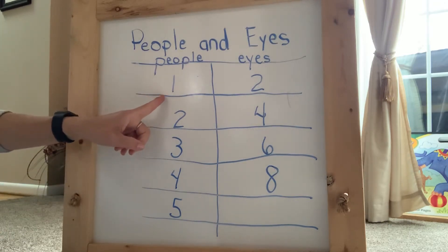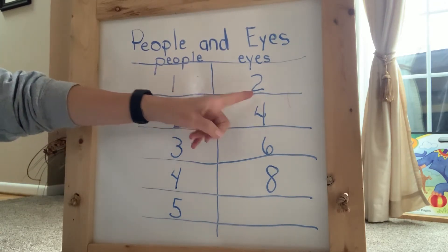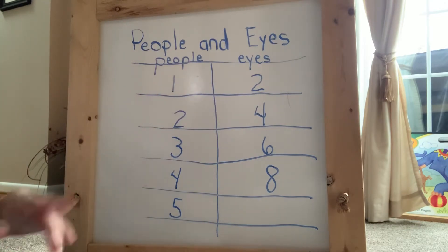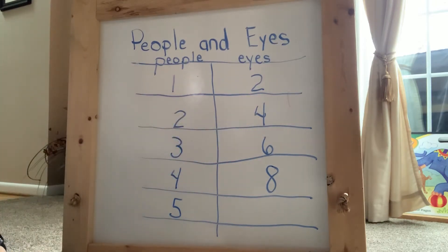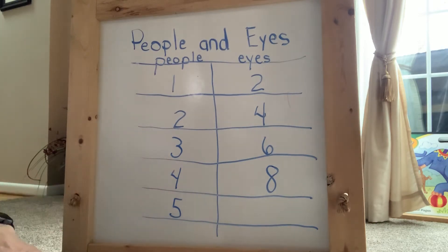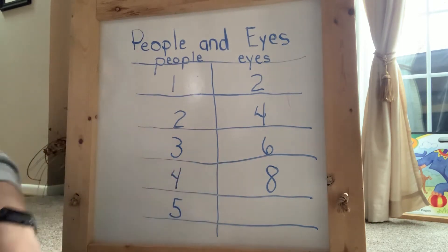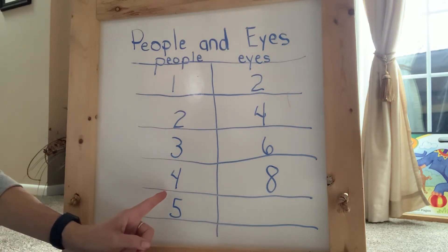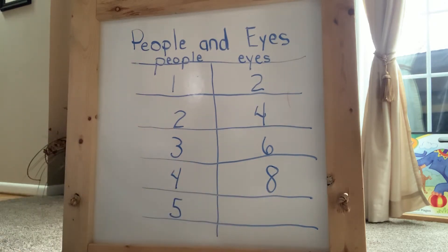So one person has two eyes. If I have two people, I have four eyes altogether. If I have three people, I have six eyes. If I have four people, I have eight eyes.